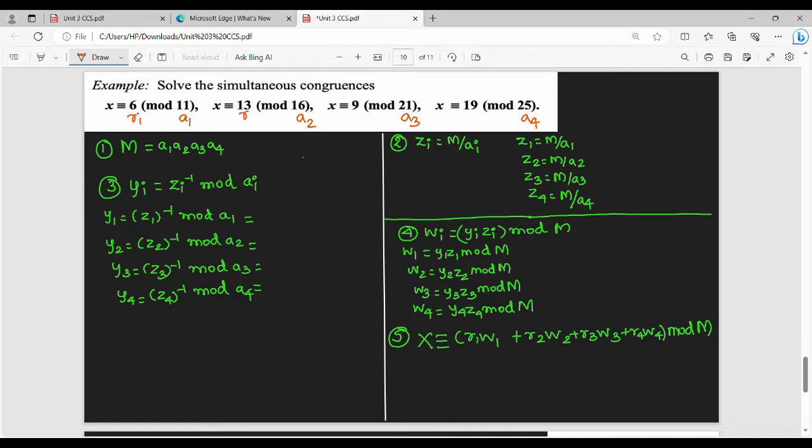Time save, because we have steps here, just value substitute. Step number one: capital M is nothing but product of my divisors, a1 into a2 into a3 into a4. Value substitute: 11 into 16 into 21 into 25. If you simplify, you get 92,400. This is a time taking question, but they will be aligned, easy mark scoring question.